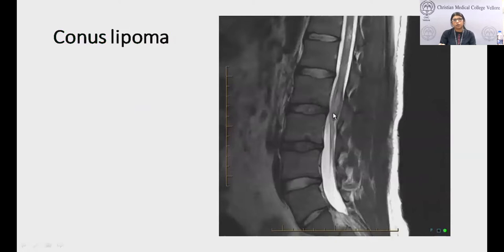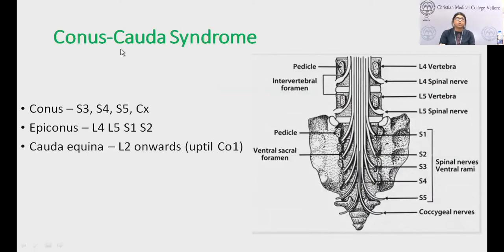This T2 sagittal section of the lumbosacral spine shows a hyperintense lesion in the lower cord — the conus — which turned out to be a lipoma.